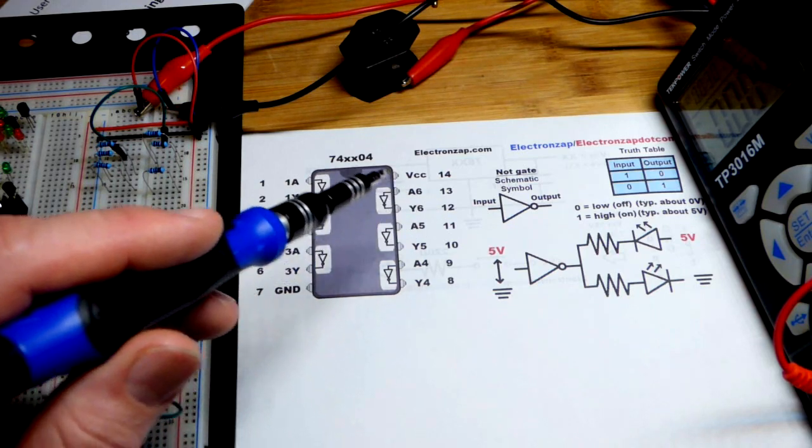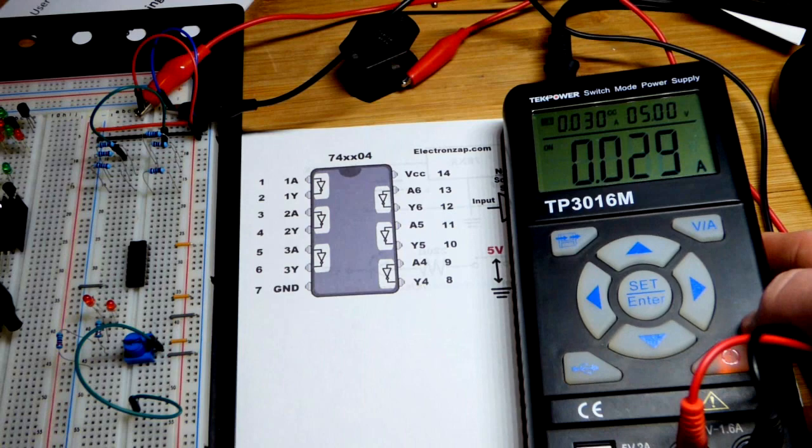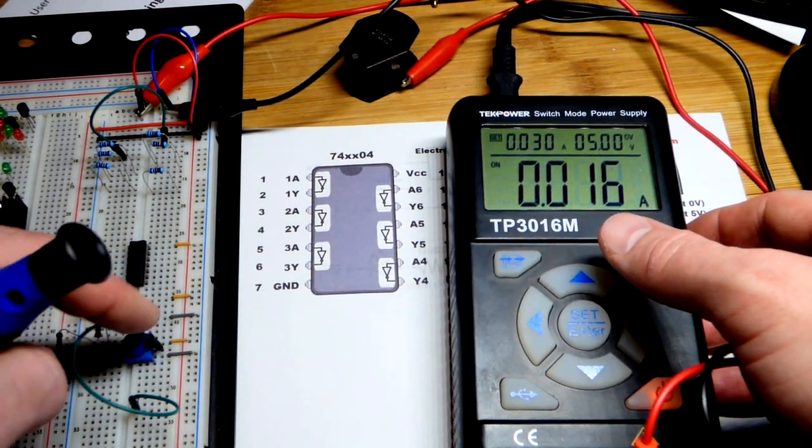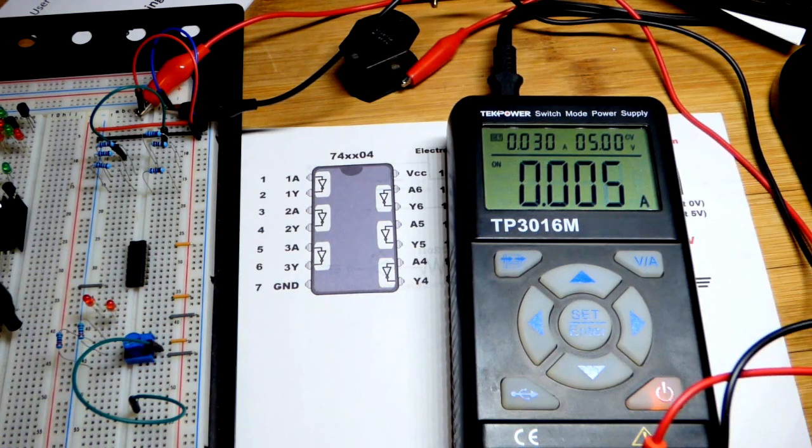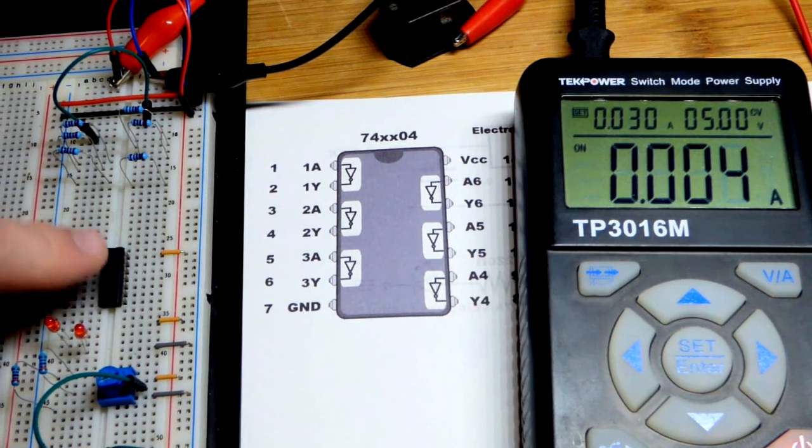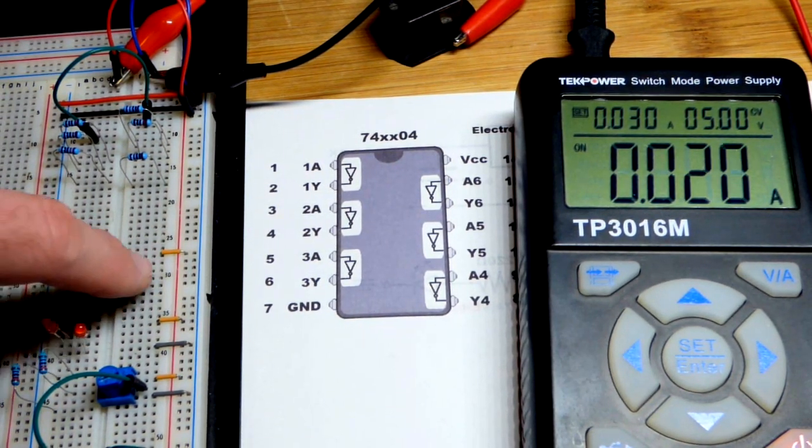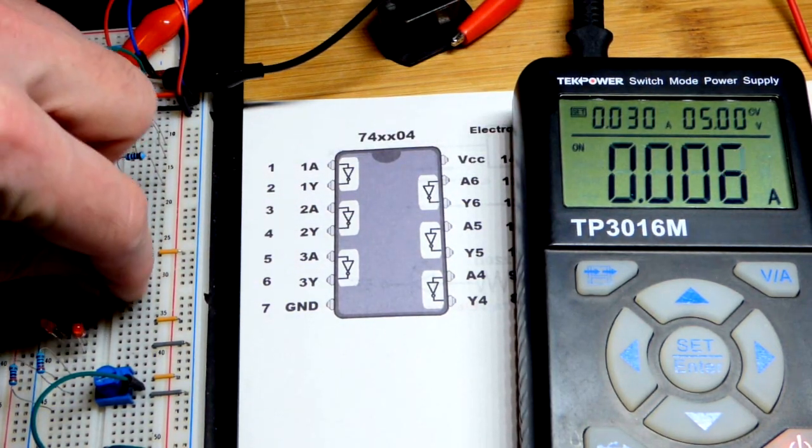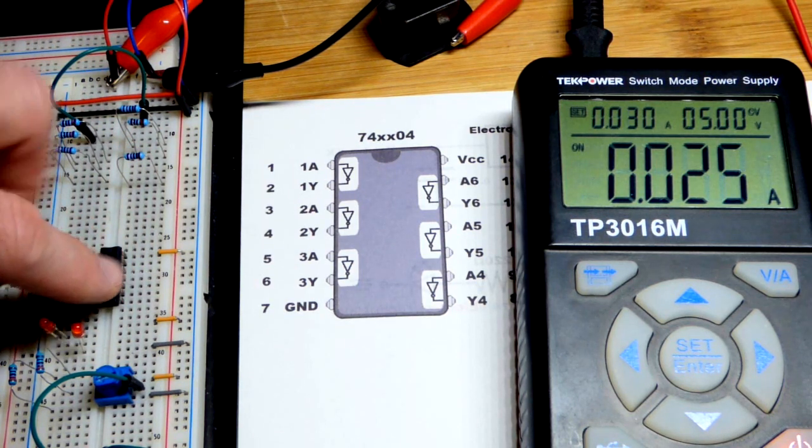First thing we're going to look at is floating inputs. You really don't want to leave the inputs floating. You can see we don't have anything wired up. We have a 10 kilo ohm resistor there. That's much less than 1 milliamp of current. And you can see a bunch of current. Also as I kind of waver around near the integrated circuit it's picking up stray signals. And if you see CC up there that means we hit the limit of what I have set for the power supply.